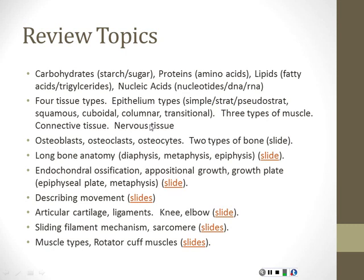The shapes: squamous is flat like a paving stone, cuboidal is cube-shaped, columnar is taller than it is wide, and transitional is kind of neither — it can look like squamous or columnar or anywhere in between. Thankfully we don't see transitional cells very often, so you can kind of record that one.